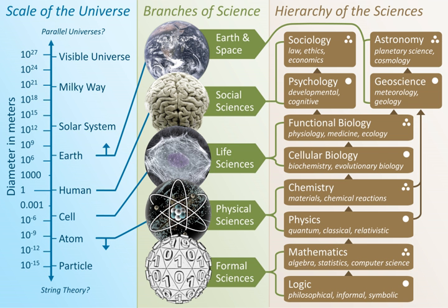Mathematics, first of all known as the science of numbers which is classified in arithmetic and algebra, is classified as a formal science, and has both similarities and differences with the empirical sciences. It is similar to empirical sciences in that it involves an objective, careful and systematic study of an area of knowledge; it is different because of its method of verifying its knowledge, using a priori rather than empirical methods.